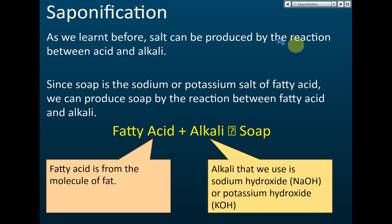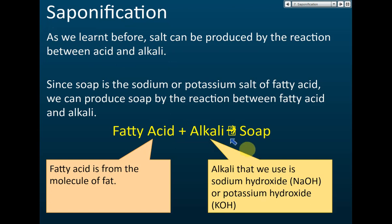As we learned before, salt can be produced by reactions between acid and alkali. Soap is a sodium or potassium salt of fatty acid — fatty acid reacts with alkali to produce salt. The source of alkali is sodium hydroxide or potassium hydroxide. Commercially, some factories may use ammonia, but that makes the soap very expensive.